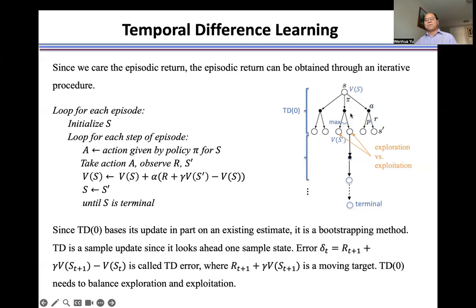However, this is for exploitation. Also, we need exploration to see from other next state S' if we can get more return or not. So the TD method needs the balance of exploration and exploitation.